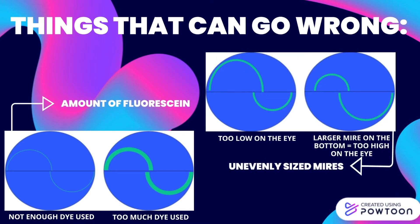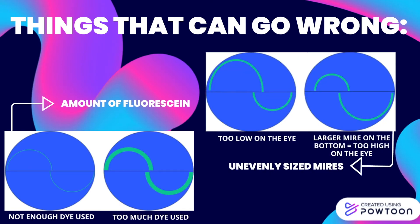Thicker lines can be caused by an excess amount of fluorescein and will overestimate pressure, while thin lines indicate not enough dye and can underestimate pressure. When the prism is placed on the cornea slightly off-centre, this can create mires of unequal sizes. When there's a larger mire on top, you're too low on the eye and need to move up. When the larger mire is on the bottom, you're too high on the eye and need to move lower. In short, you need to move towards the direction of the larger mire.